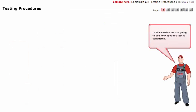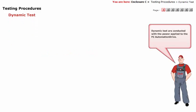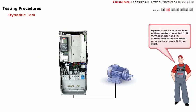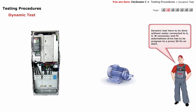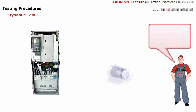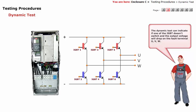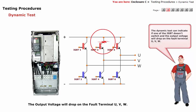In this section, we are going to see how dynamic test is conducted. Dynamic tests are conducted with the power applied to FC automation drive. Dynamic tests have to be done without a motor connected to the UVW connector, and the FC automation drive has to be programmed to a frequency of 50 Hz on start. The dynamic test can indicate if one of the IGBTs doesn't switch and the output voltage will drop on the fault terminal UVW.